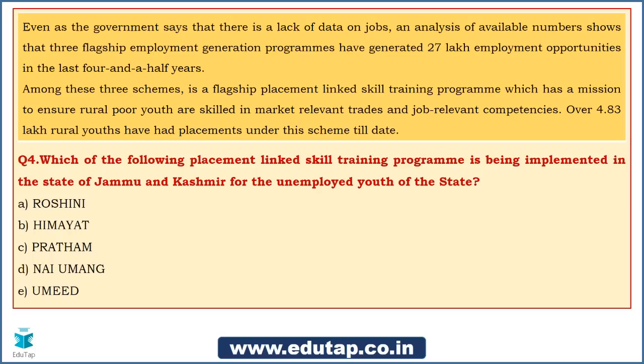Tanuja says A — Roshni. Swapnil says B — Himayat. Shubham comes up with Umeed. Mayur again says A. Sumit Kumar says E — Umeed. Prasanna Nayak says B. Most of you are going with option B. Satya also says B. So the majority are choosing Himayat, with some going for Roshni and Umeed.